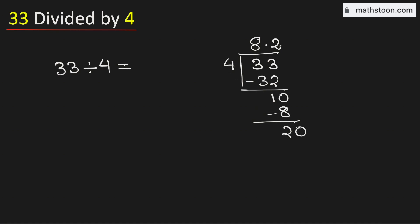And we know that 4 times 5 is 20. Subtract, we get 0. As we have obtained the number 0, so we will stop.